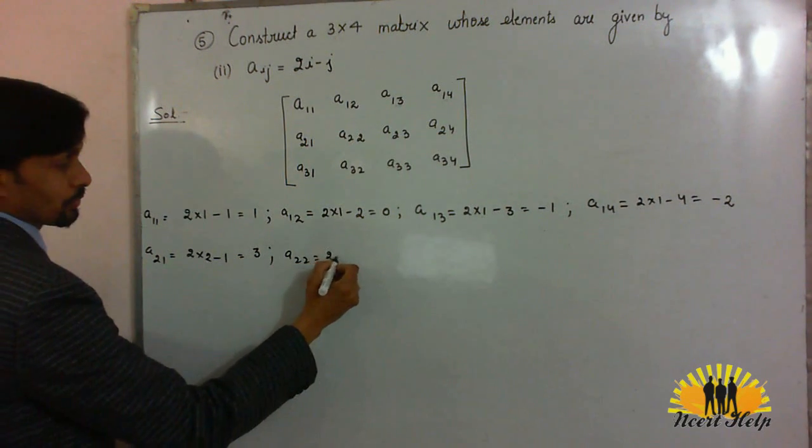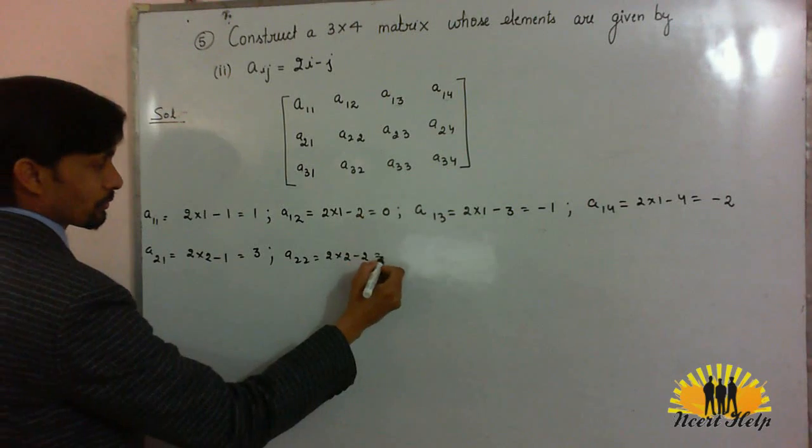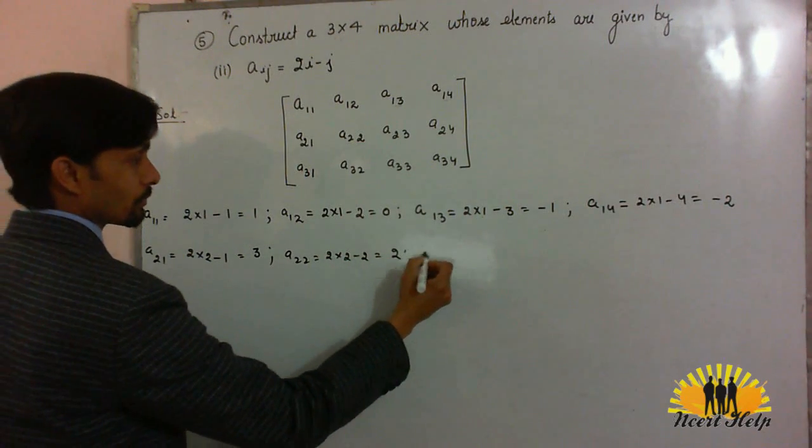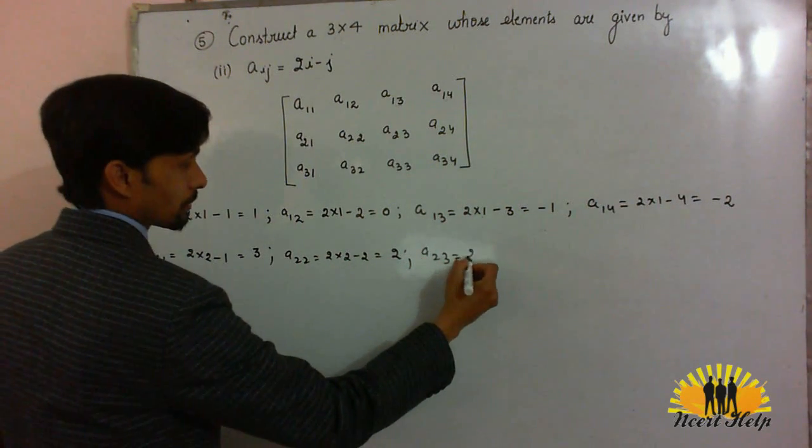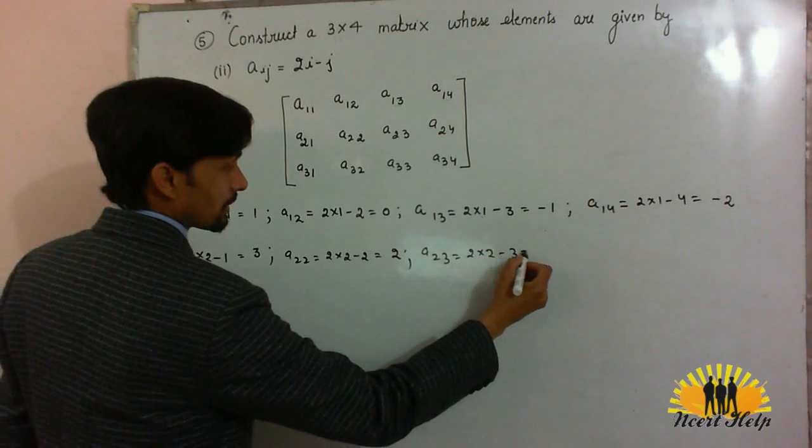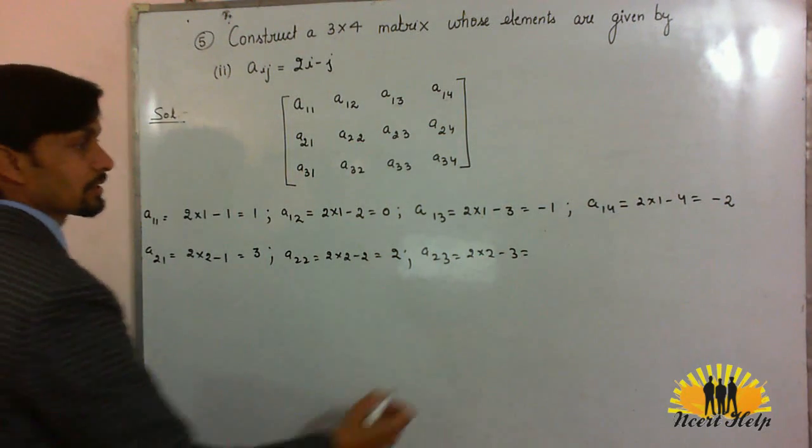A22, 2 into 2 minus 2. 4 minus 2 is 2. A23, 2 into 2 minus 3. 4 minus 3 is 1.